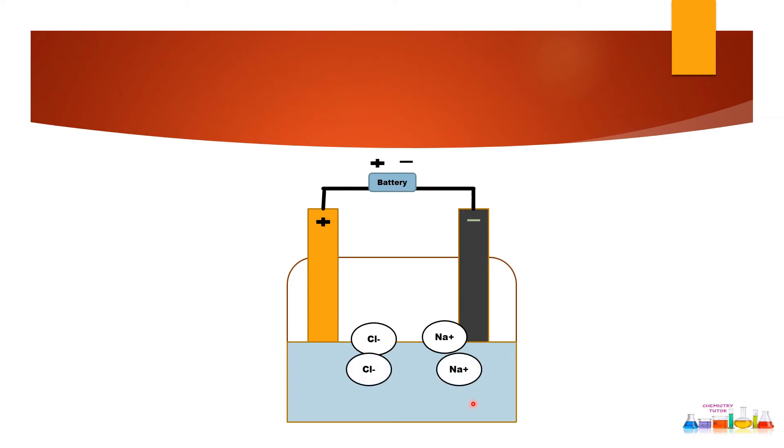Now all the sodium ions are moving towards cathode because cathode is negative plate, and all the chloride ions are moving towards anode because anode is positive plate. So because of positive and negative charges they will move towards cathode and anode.